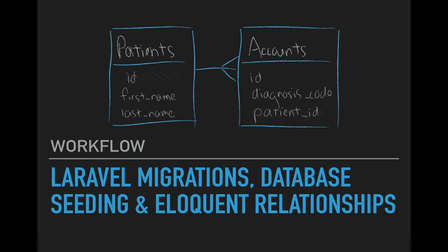I wanted to capture a quick workflow for creating migrations and seeding the database, as well as implementing a couple of Eloquent relationships. The database schema and table relationships we'll be looking at in this video are based on the example of patients and accounts. Whenever a patient comes into a clinic for a different treatment issue, that will be represented by a different diagnosis code, triggering the creation of a new account for the patient. There will be one patient with many accounts, and each account belonging to one patient.